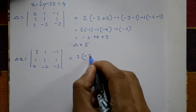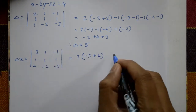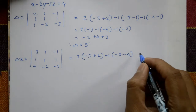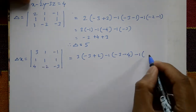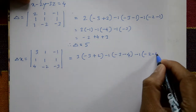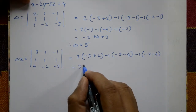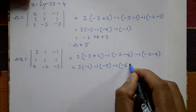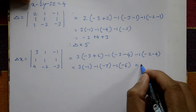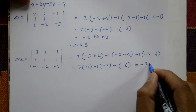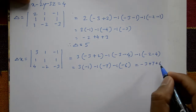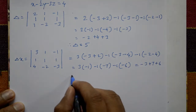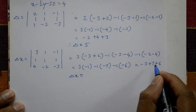Expand the Delta x determinant: 3 into (-3 - (-2)(4)) = 3 into (-1). Minus 1 into ((-3) - 4). Minus 1 element: -1 into (-2 - (-4)). This gives 3(-1) - 1(-7) - 1(-6), which equals -3 + 7 + 6. Therefore, Delta x is equal to 10.